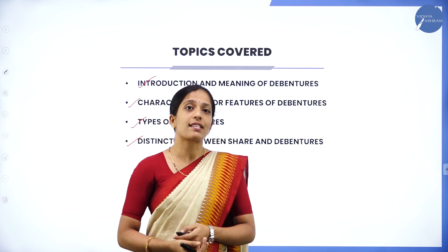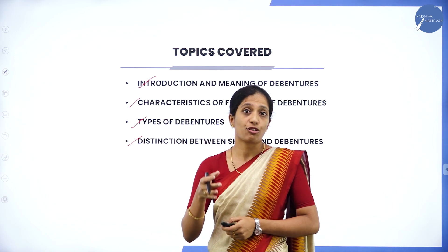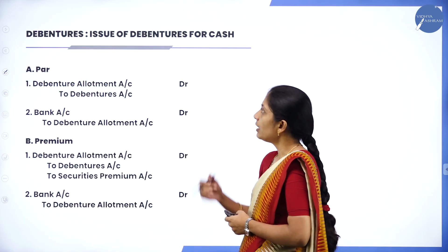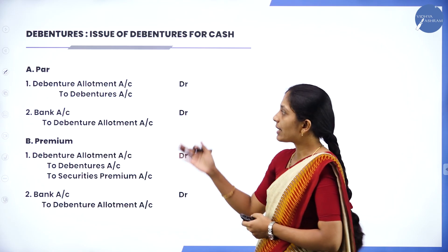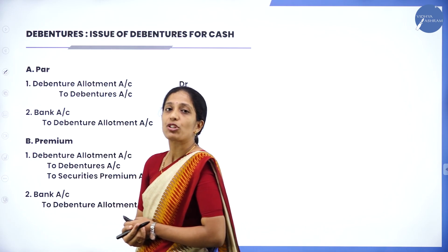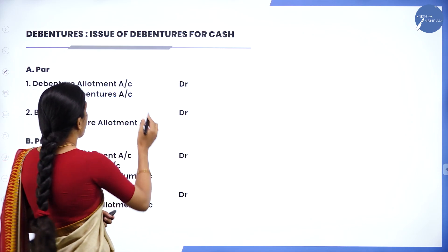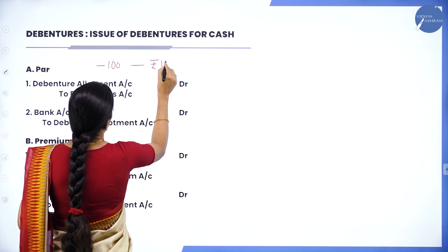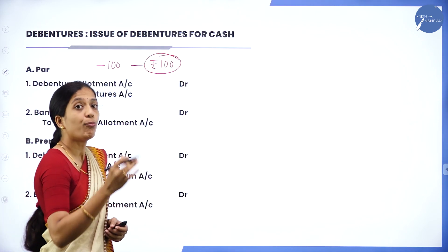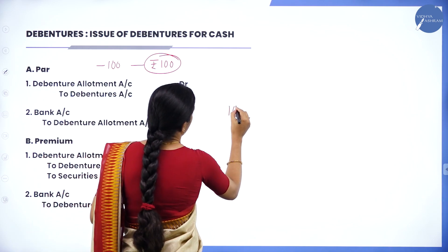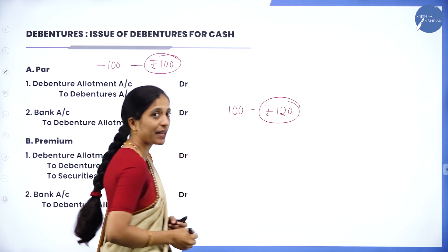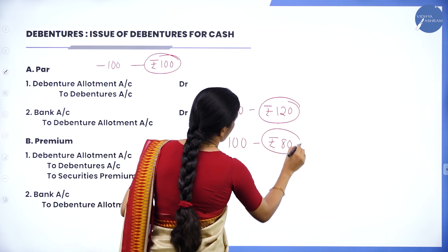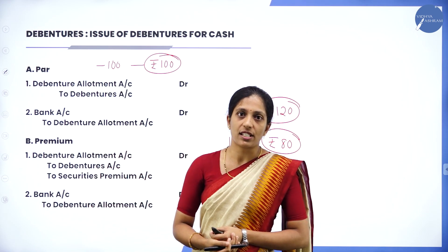In today's session we will discuss journal entries for issue of debentures for cash — whether issued at par, premium, or discount. Par means the exact value: if a ₹100 debenture is issued at ₹100 it is at par. If issued at ₹120 it is at premium. If issued at ₹80 it is at discount. These are the three situations under which debentures can be issued.